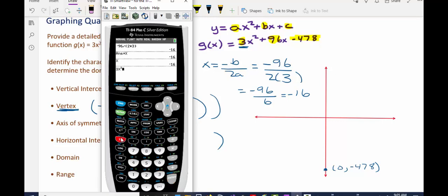So now if I type out 3x squared plus 96x minus 478 and then press enter, the calculator valued the function g at the input value of negative 16. So now I know the y value of the vertex is negative 1,246.